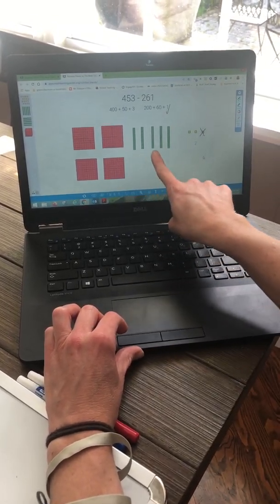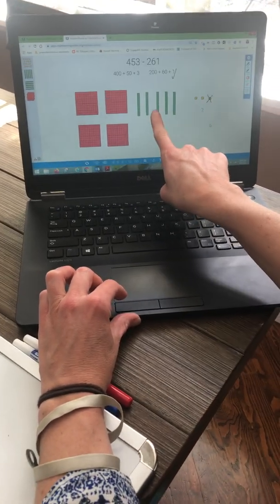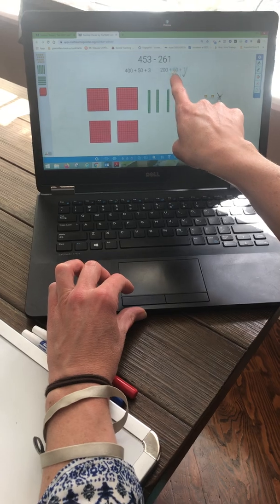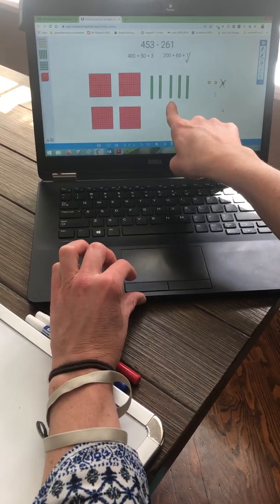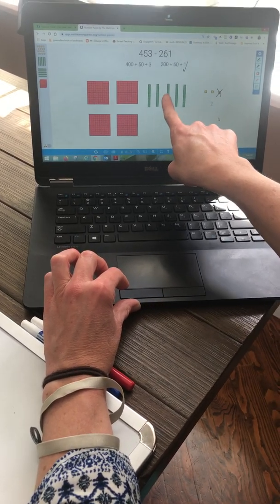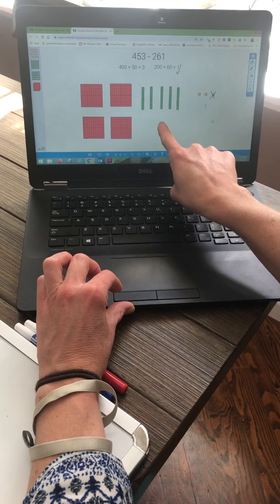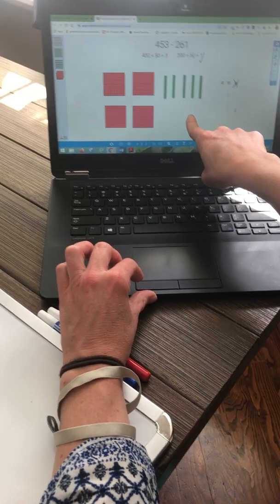All right. I have five tens here. Five tens is worth 50, 10, 20, 30, 40, 50. I need to take away 60. I can't take away 60 if I only have 50. I would take away 50, and then I would need to take away another 10 and I don't have enough tens. So I am going to have to regroup.